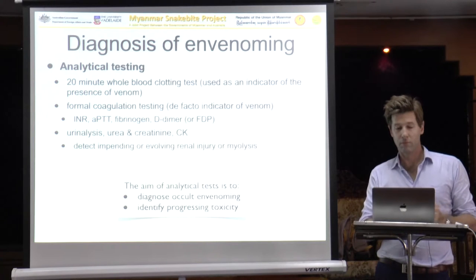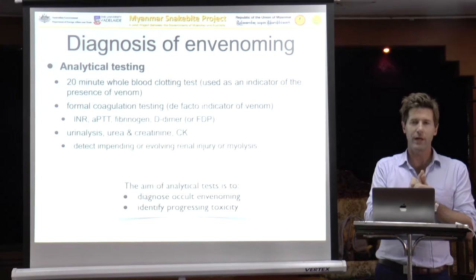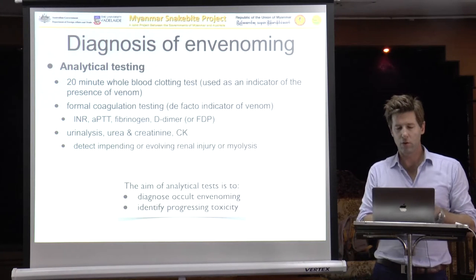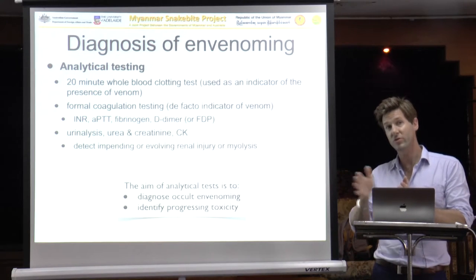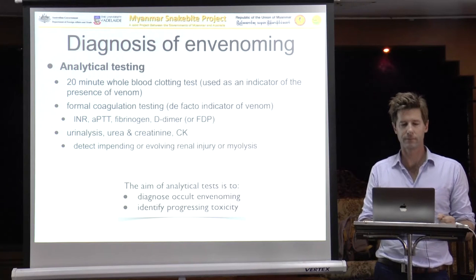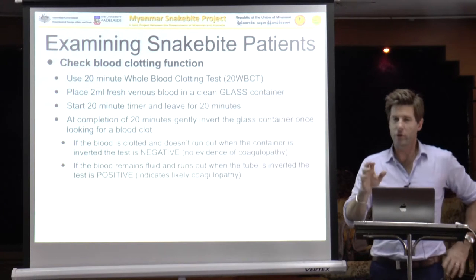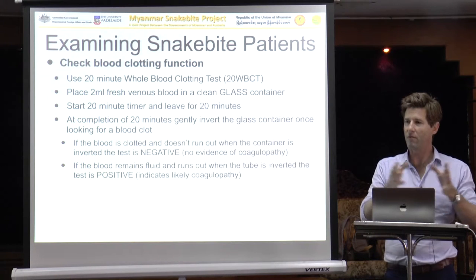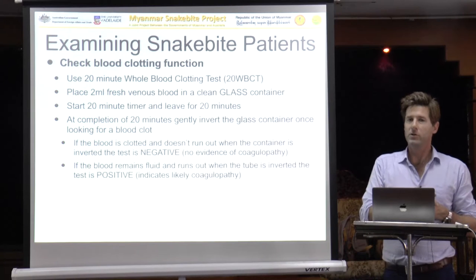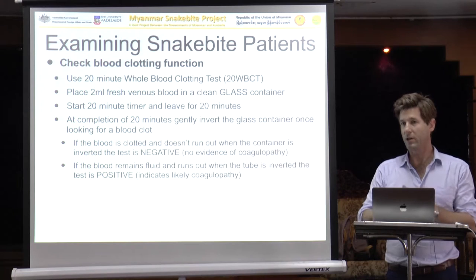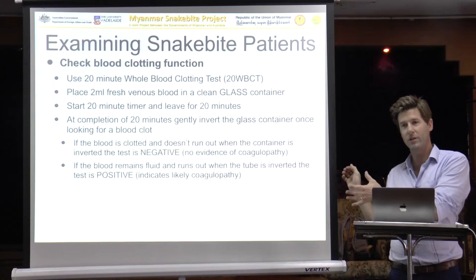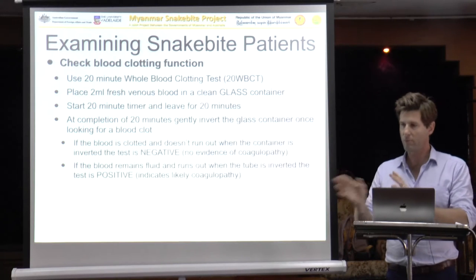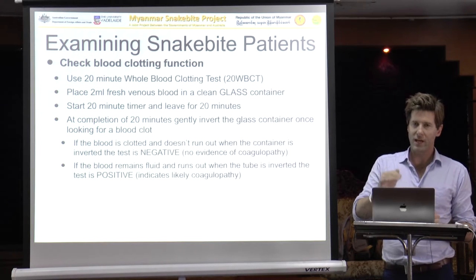You will find some patients who look well, examine normally, but have an abnormal whole blood clotting time — these patients still need antivenom. Testing is also used to evaluate the evolution of end-organ toxicities and progressing toxicity. It is very important that we are all doing the whole blood clotting time in the same way. Ideally your country should evaluate whether this test is a good test, and to do that you need everyone performing it the same way, recording results, and having good patient information in the notes — so you can look back and analyse: the WBCT was non-clotting, we gave antivenom, the patient got better. Standardise the way you do this test.